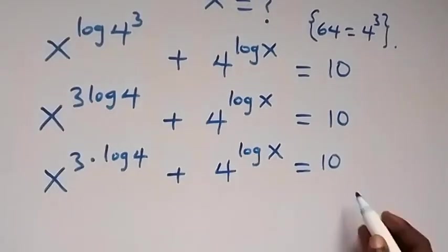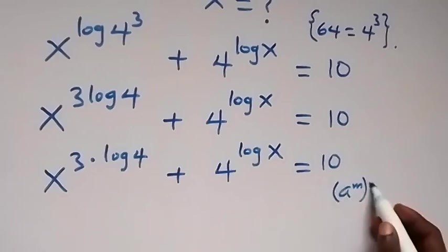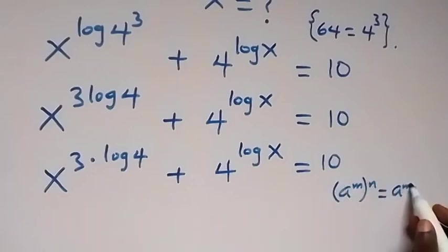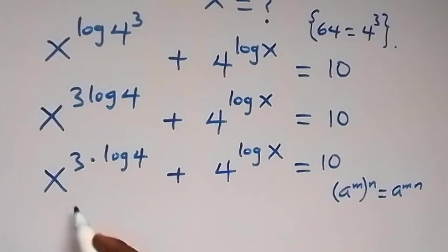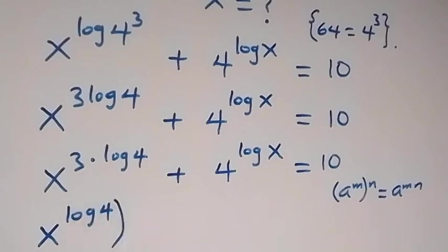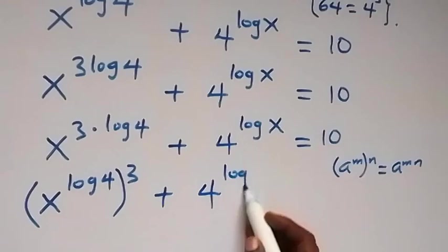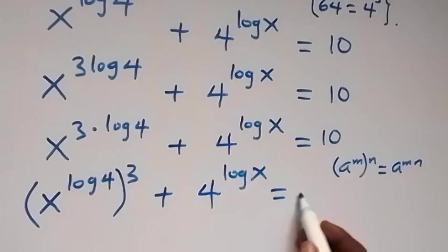From the law of indices, when we have (a raised to power n) raised to power n, that is the same as a raised to power n·n. From here, it implies we can separate the 3 out, giving us (x raised to power log 4) raised to power 3, then plus 4 raised to power log x, equals 10.